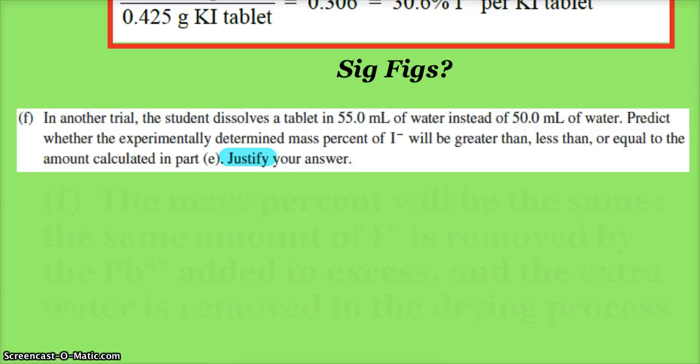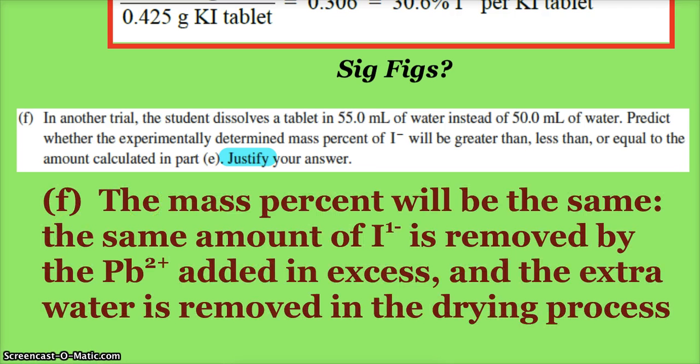Well, if you think about it, whether you did 50 mL, 55 mL, or 500 mL, all we're looking at is we dissolve the tablet so we get all the iodide we need, then we put in the excess lead nitrate, so the lead and the iodide get together. All the water is just the medium, and we just got to get rid of it by doing the drying. So it would just probably take longer. The mass percent will be the same. The same amount of iodide is removed—it was put in through the tablet, removed by the Pb²⁺ ions that were added in excess, and all that extra water is just removed in the drying process. Too much more water would just extend how long it would take for us to filter and get our precipitate isolated, but it will not affect our mass percent—that should be the same.